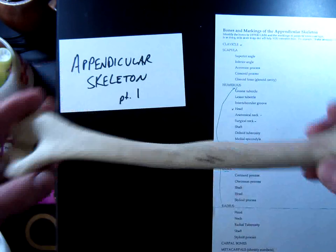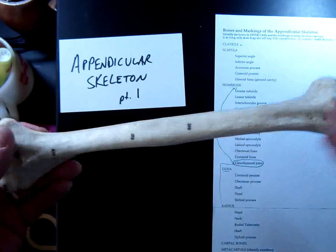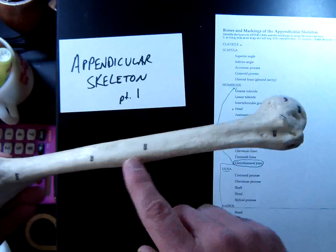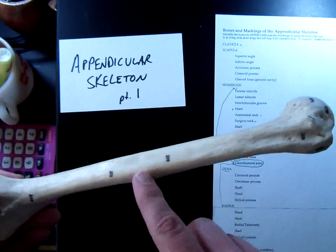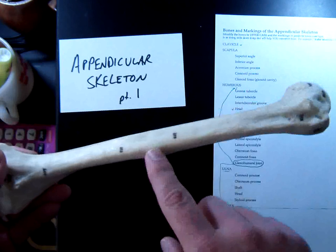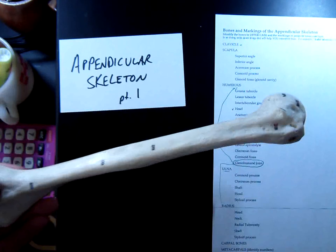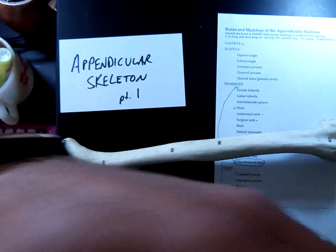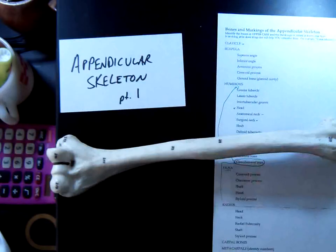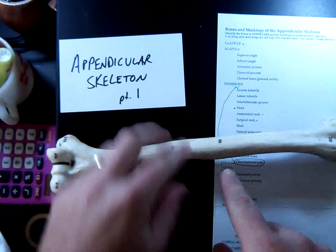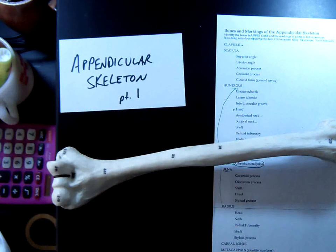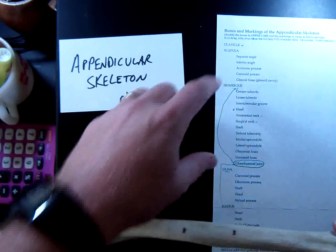Halfway down the shaft is a little raised ridge or bump on the opposite side of the head, called the deltoid tuberosity — again, another word for bump. That's where your deltoid muscle of your shoulder attaches. If you feel your shoulder and lift your arm to the side, you can feel that muscle flex; it connects right here so that when it contracts it lifts your arm out to the side. So that's the clavicle, scapula, and humerus in part one.